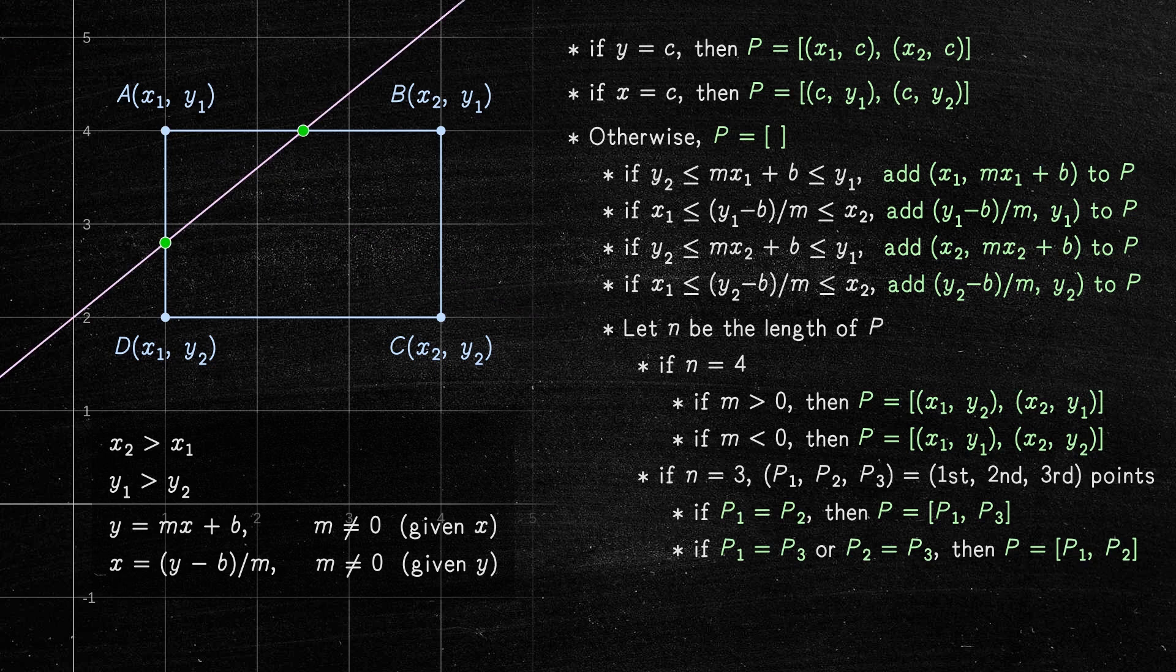That's it. That's how we find the two intersection points between the line and the rectangle. I hope this video was helpful. Thanks for watching.